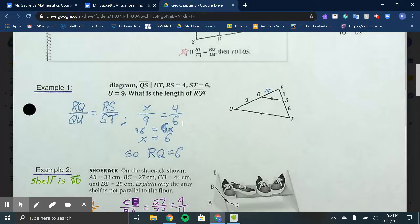For a proportion, you want to cross-multiply, then divide. So 4 times 9 is 36, 6 times x is 6x. Divide both sides by 6, and we know segment RQ is 6.